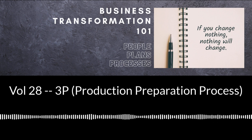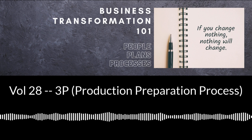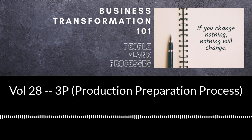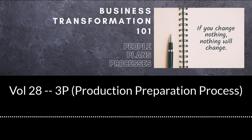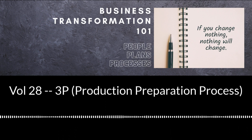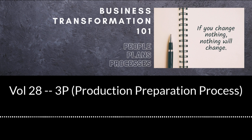These objectives could include product features and performance, customer demand level, quality requirements, target cost, production lead time, etc. Once the team is aligned on the objectives, they begin by itemizing the key functional items of the product and production process to determine which items should be explored for improvement.